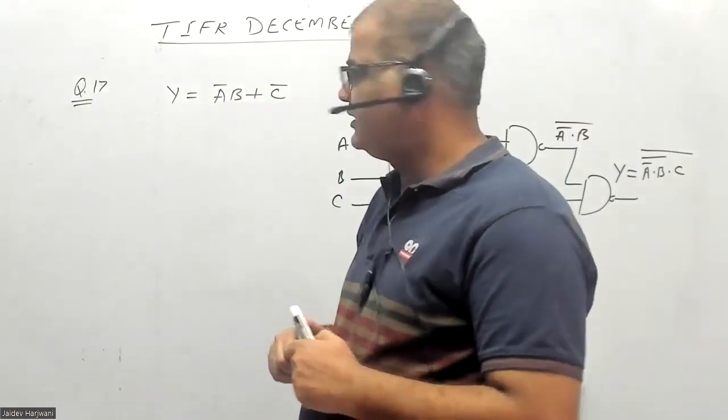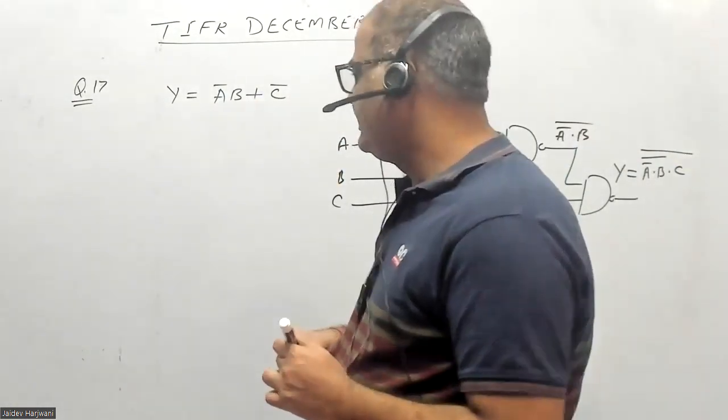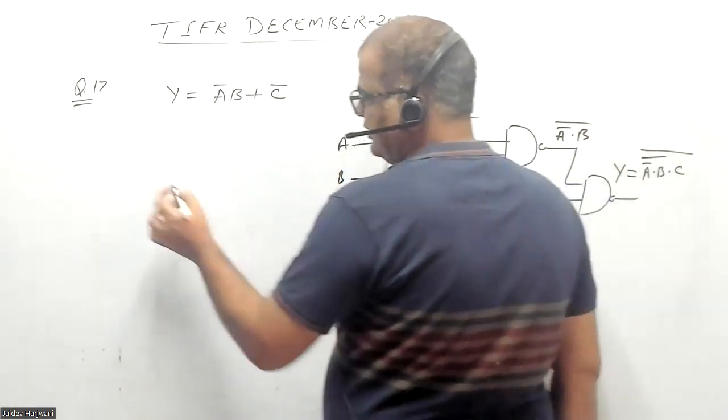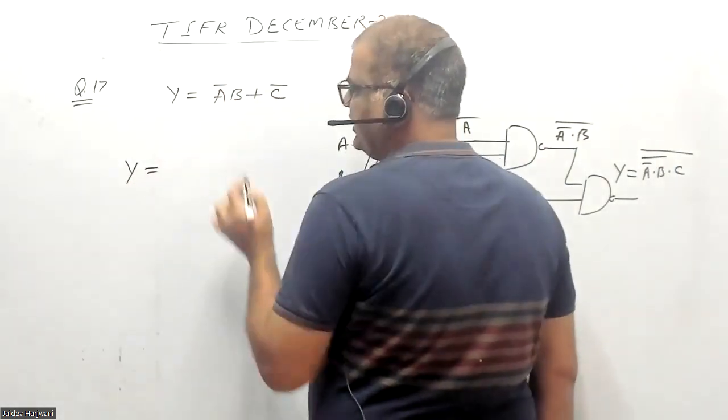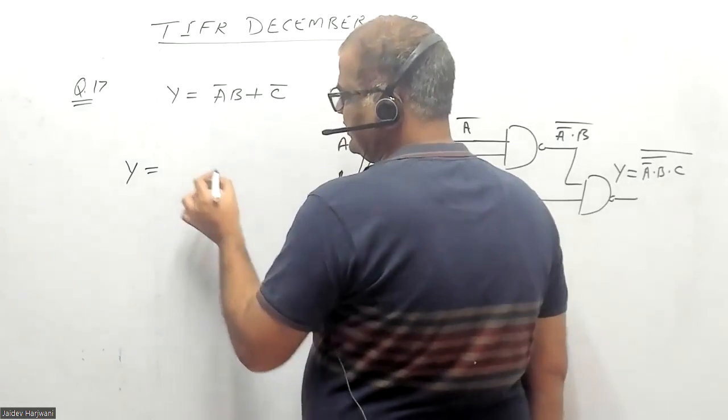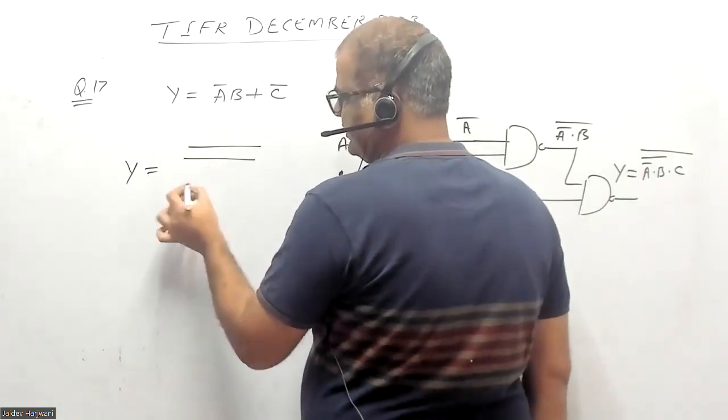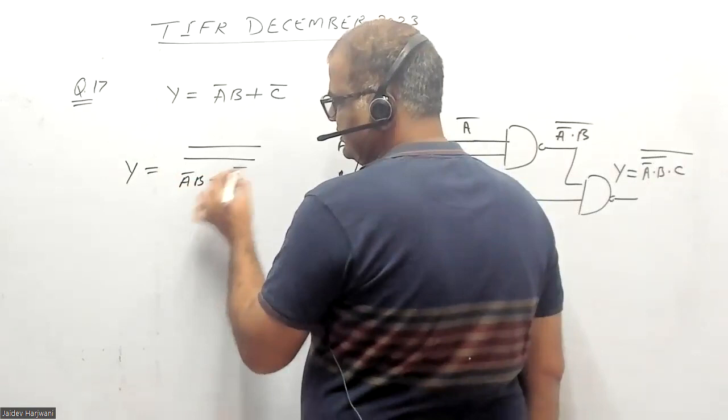To implement this function, each term has to be brought in the form of output of a NAND gate. You can do double complement: A̅B + C̅.